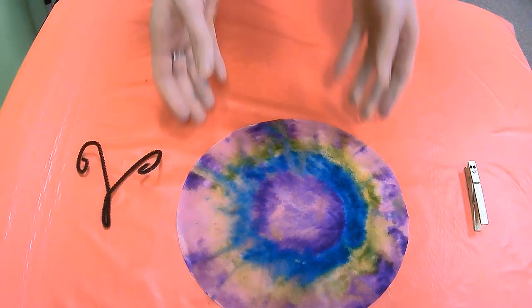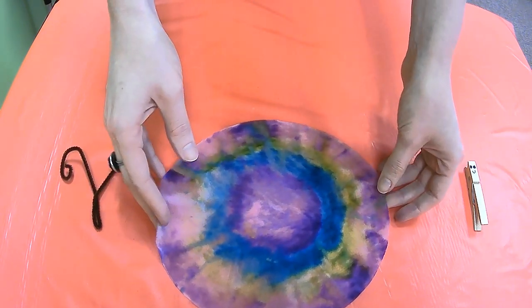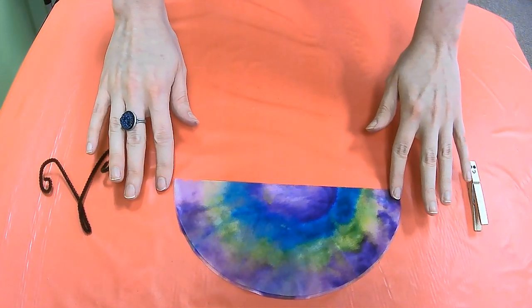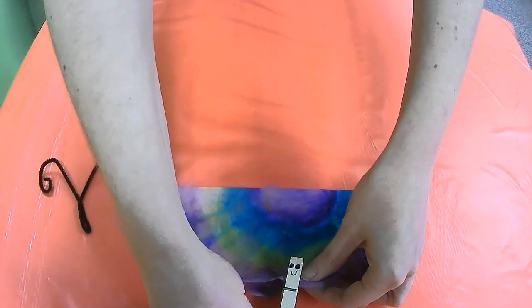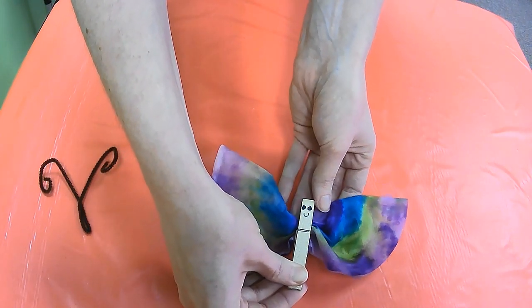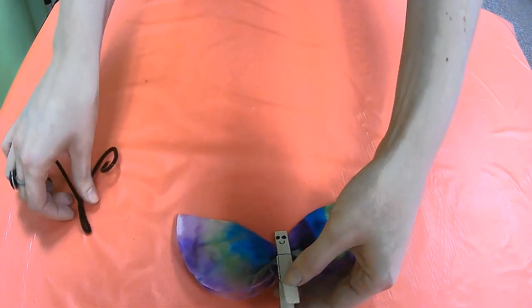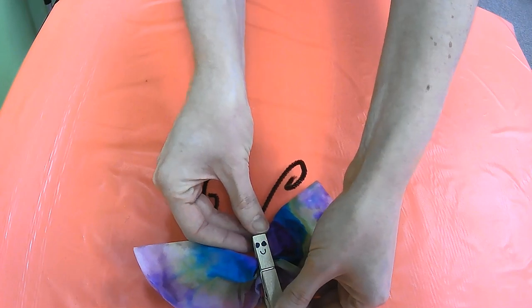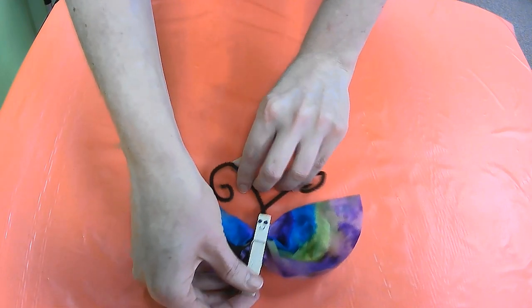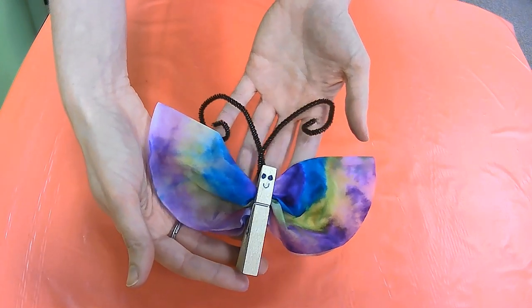All right, guys. So once your coffee filter is done drying, you're ready to assemble your butterfly. Now you can do this in a number of different ways, but I'm going to go ahead and fold my wings in half. And then take the clothespin, put it in the middle and kind of scrunch the wings down. And they end up making this cute little wing shape. And then the last step is adding in the antenna at the top. And the clothespin keeps everything in place, which is super convenient. Remember, you can adjust things as needed. And there you go. That's your very own clothespin and coffee filter butterfly.